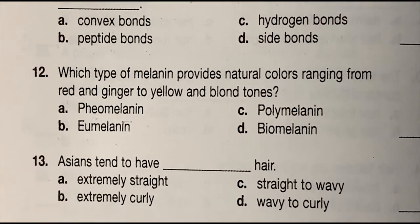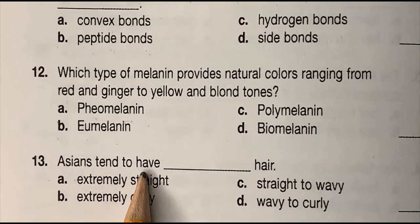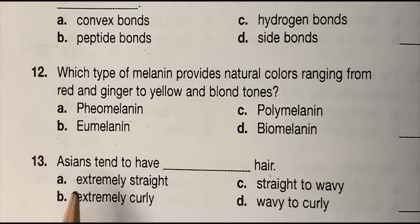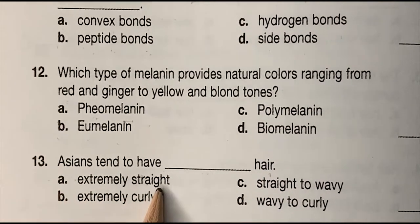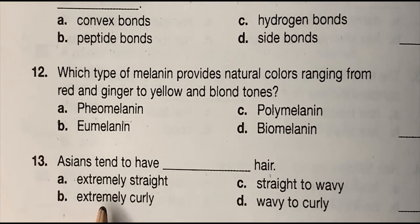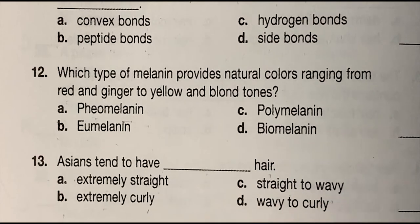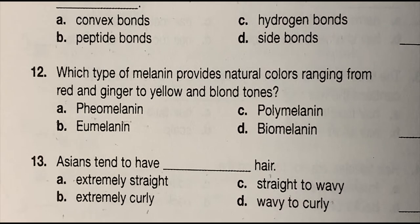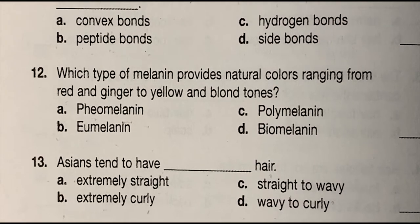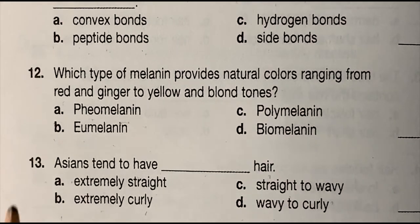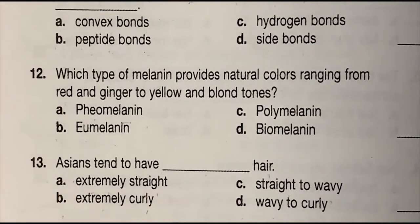Number 13: Asians tend to have blank hair — (a) extremely straight, (b) extremely curly, (c) straight to wavy, or (d) wavy to curly. The correct answer is (a) extremely straight.